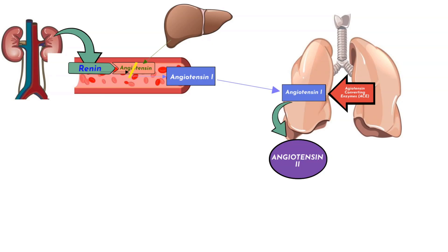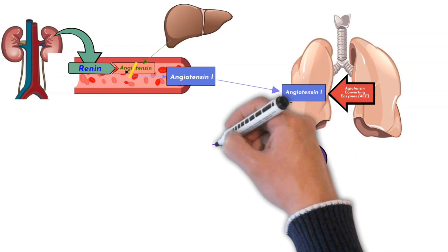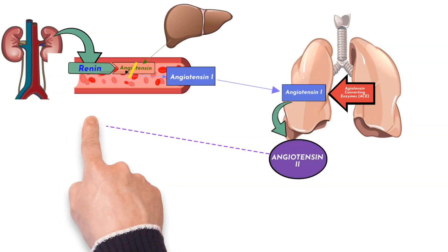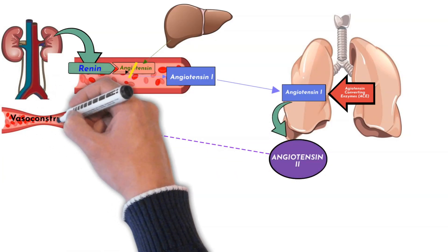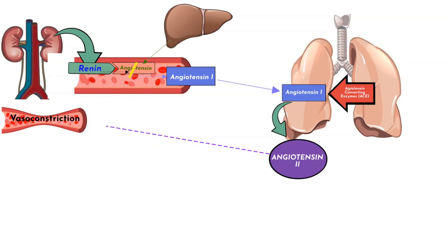Angiotensin-2 is a potent peptide hormone. It binds to various angiotensin receptors throughout the body to exert its effects. It stimulates vasoconstriction of blood vessels. As we know, vasoconstriction will cause increased systemic vascular resistance, and that will lead to increased blood pressure. Remember that blood pressure equals cardiac output times systemic vascular resistance.